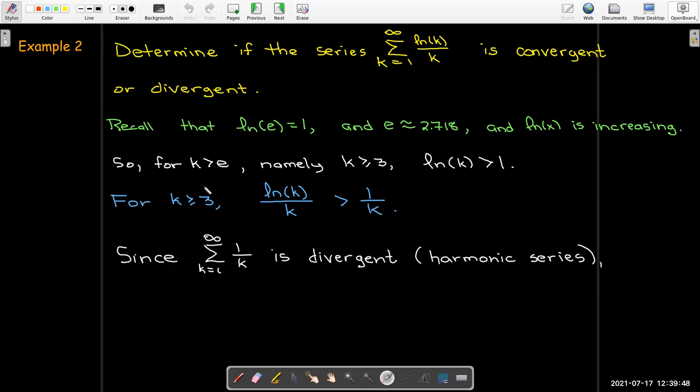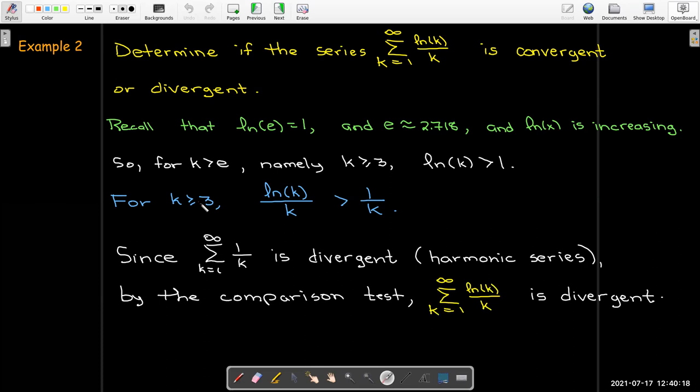So we're starting at k equals 3 here. That's fine. If I needed to start at k equals 30, that would be fine as well. It really matters what happens as you continue to go into the tail of the series. So now we can say the series with terms 1 over k is divergent. That's my harmonic series. So by the comparison test,